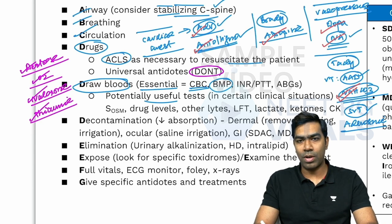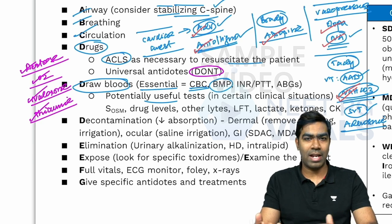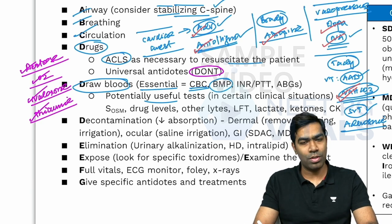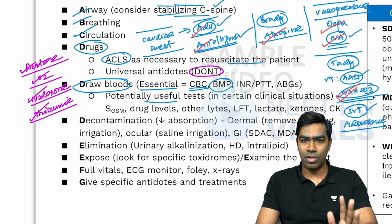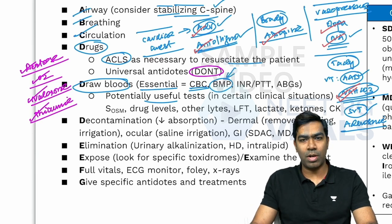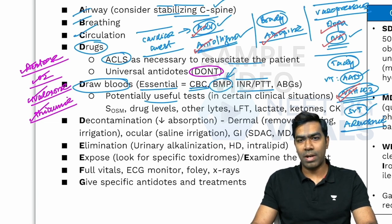The basic metabolic panel includes urea, creatinine, uric acid, sodium, potassium, chloride, bicarbonate, and random blood sugar. Some institutes also include calcium and magnesium. You also need to do a coagulation profile including prothrombin time, INR, and partial thromboplastin time. ABG is an indispensable investigation in the emergency room — all patients with suspected poisoning should undergo arterial blood gas analysis.